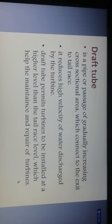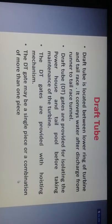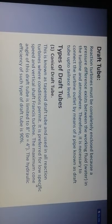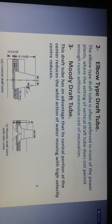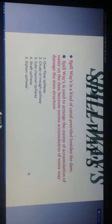A draft tube is a pipe or passage of gradually increasing cross-sectional area which connects the turbine exit to the tailrace. It reduces the high velocity of water discharged by the turbine. The draft tube permits the turbine to be installed at a higher level than the tailrace level, which helps maintain the repair of turbines. It is located between the lower ring of the turbine and the tailrace. Types of draft tubes include conical draft tubes, elbow draft tubes, and Moody draft tubes. Elbow draft tubes are often preferred in most hydropower plants, with the conical portion at the center reducing wheel action of water at high velocity.